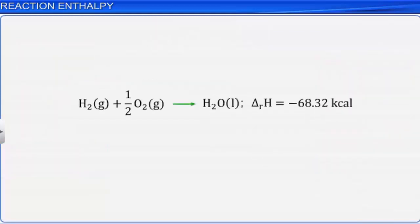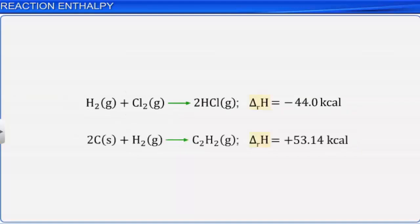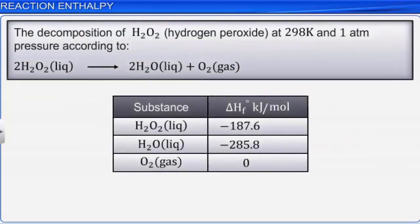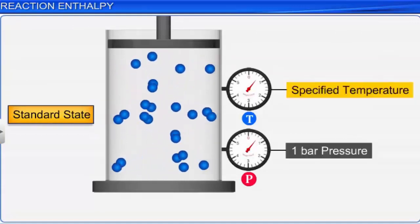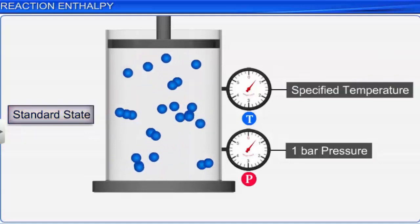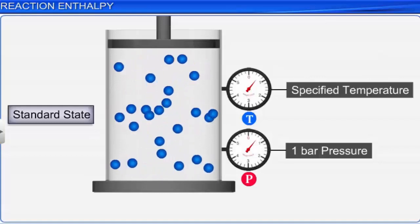The enthalpy of any reaction depends on the conditions under which it is carried out. Thus, it is difficult to compare the enthalpy values for different reactions. To overcome this problem, the values of delta H for different reactions are expressed at their standard state conditions. The standard enthalpy of a reaction is the enthalpy change accompanying the reaction when all the reactants and products are taken in their standard states. A substance is said to be in a standard state when it is present in its most pure state under a pressure of 1 bar at a specified temperature. Standard enthalpy is represented as delta H naught.